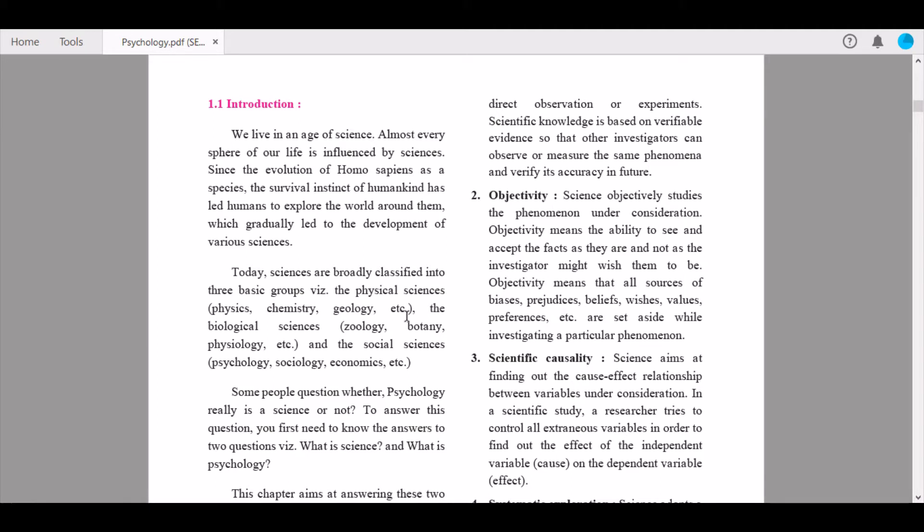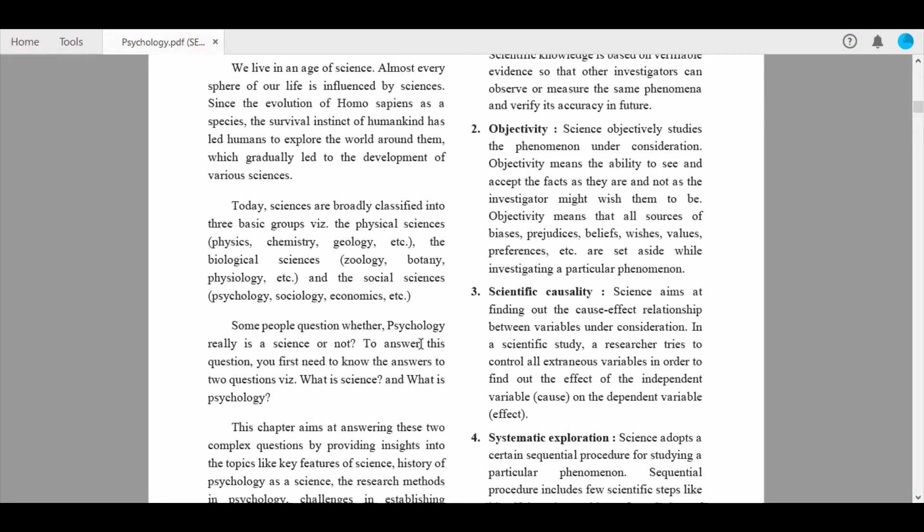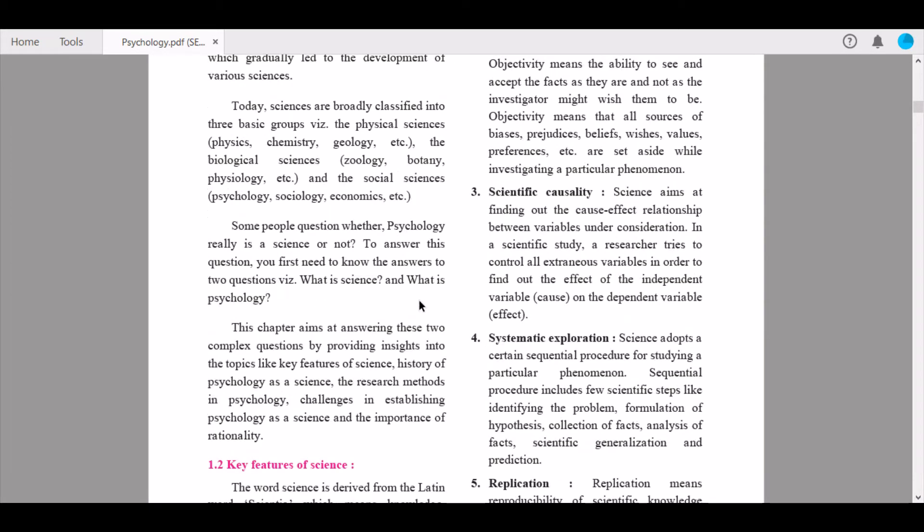Today sciences are broadly classified into three groups: the physical sciences like physics, chemistry, geology; the biological sciences like zoology, botany, physiology; and the social sciences like psychology, sociology, economics. Some people question whether psychology really is a science or not. To answer this question, you first need to know what is science and what is psychology.